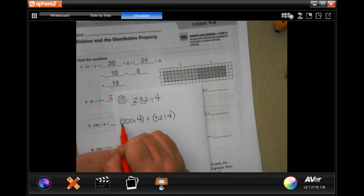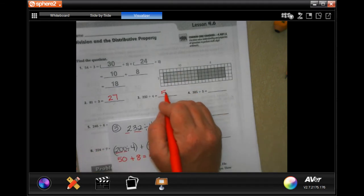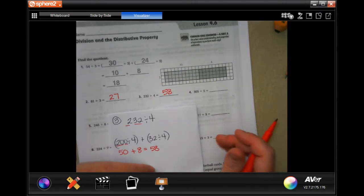So four goes into 20, five times, then add that zero on, and four goes into 32, eight times, so 58. I know it's a little bit confusing when you first start, you will get better at it, I promise.